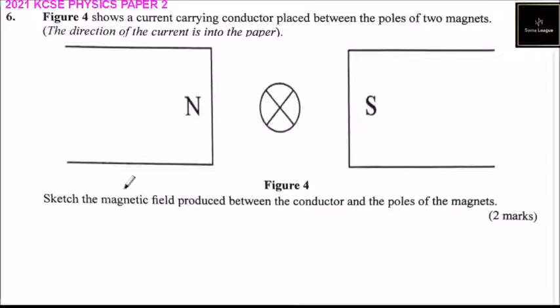So we have the magnet. This is the north pole. This is the south pole. And this is the current carrying conductor. So sketch the magnetic field between the conductor and the poles of the magnet.